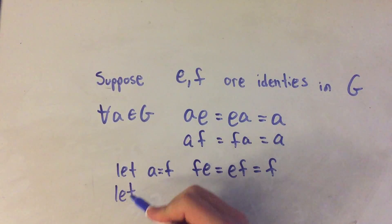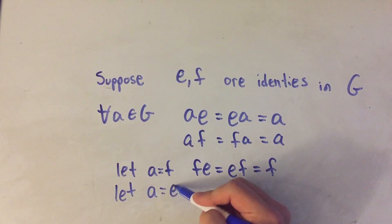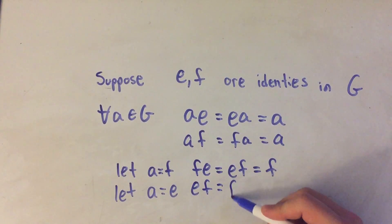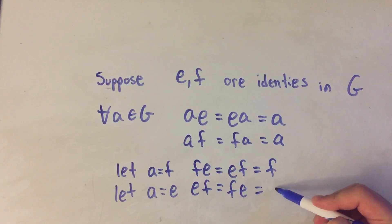I'll do something similar. In my second equation, let's let A equal E. Then in my second equation here I would have E times F is equal to F times E is equal to E.